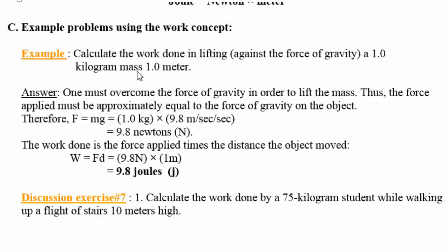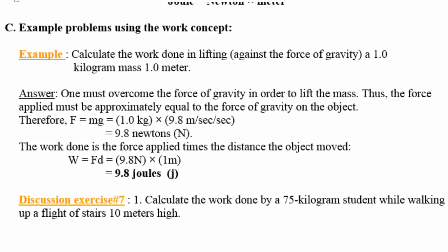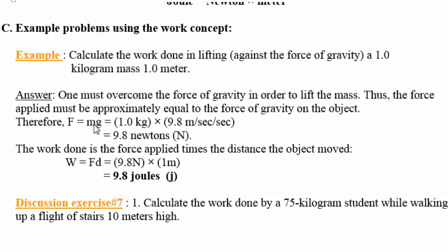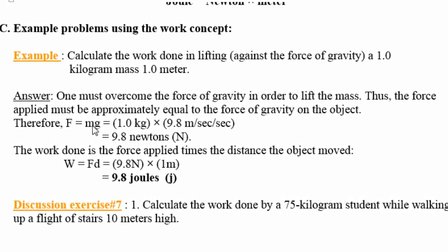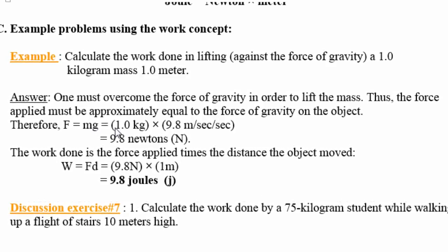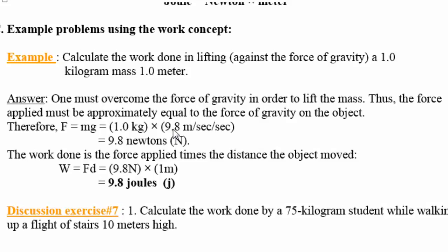Here we are given the mass to be one kilogram. To find the force, which is the weight, we have to multiply the mass by the acceleration due to gravity, as we learned in lesson number six. So the mass is one kilogram and the acceleration due to gravity is 9.8 meters per second squared.